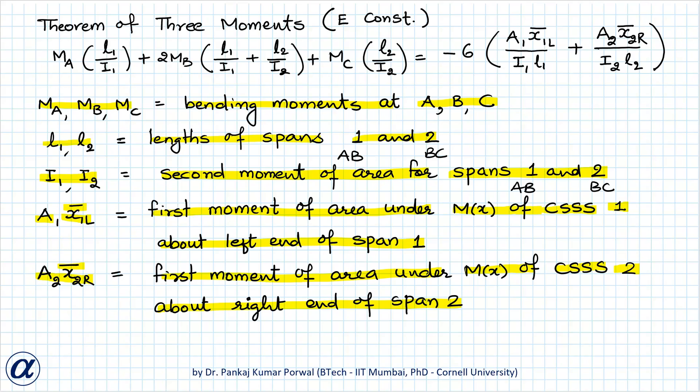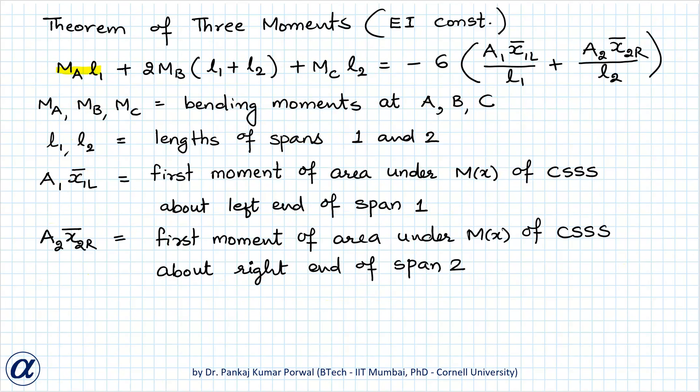Now, this equation of 3-moment theorem is written given only E is constant but if I is also same for both the spans then I1 is equal to I2 and in that case, this I from the denominator on both sides will cancel and we are left with MA L1 plus 2MB L1 plus L2 plus MC L2 equals to minus 6 A1 X1 L bar divided by L1 plus A2 X2 R bar divided by L2 and the symbols have their usual meaning.